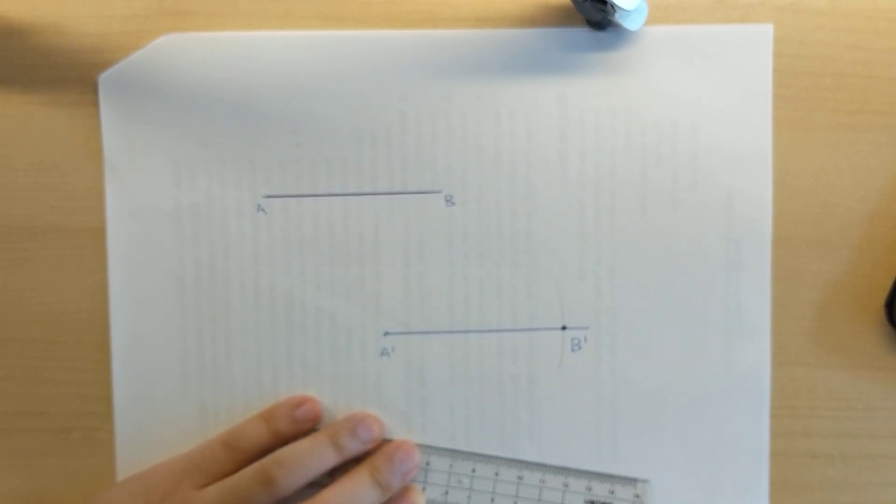So I've copied the line segment AB. I placed line segment AB on point A prime and then generated B prime there.